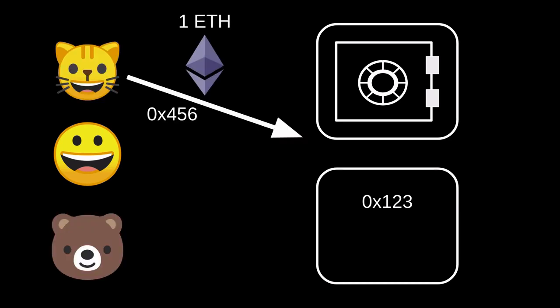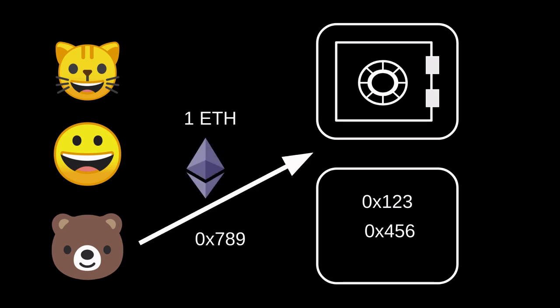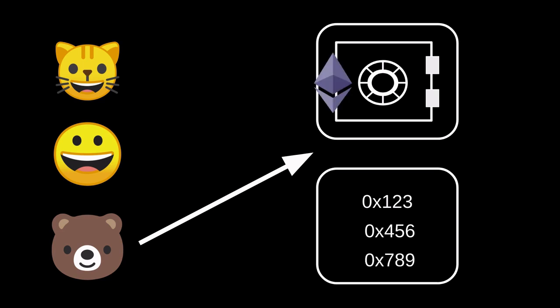Users are always depositing and withdrawing from Tornado Cash. Charlie the cat also deposits one Ether and his hash is 0x456. The Ether gets locked into Tornado Cash and the hash 0x456 is also recorded. Bob the bear also does the same — he sends one Ether and his hash is 0x789. His Ether gets locked and his hash 0x789 is also recorded into the smart contract. You might have noticed that Alice, Bob, and Charlie all deposited one Ether.